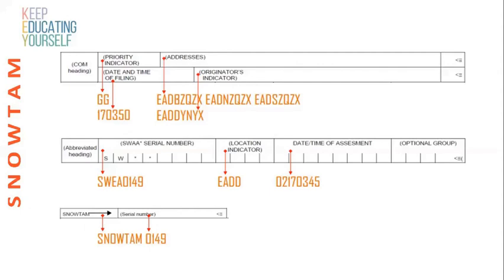The location indicator of the aerodrome for which the SNOWTAM has been issued is ECO Alpha Delta Delta. Date and time of assessment: 02 is the month, 17 is the date, and 0345 is the time. The optional field you may leave blank.